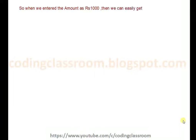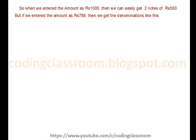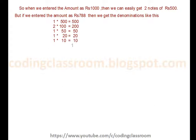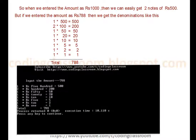When we enter the amount as rupees 1000, we know exactly how many notes we need — we need two notes of rupees 500. But if we enter the amount as rupees 788, then we get the denominations like this: one note of rupees 500, two notes of rupees 100, one note of rupees 50, one note of rupees 20, one note of rupees 10, one note of rupees 5, one note of rupees 2, and one note of rupees 1. That's a total of 788. Here is the output of my C program.